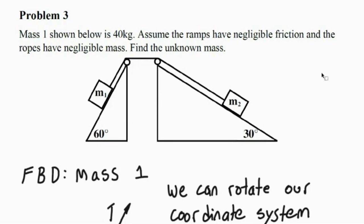So our strategy for this question: we want to know mass number 2, but if we try to draw a free body diagram of mass 2, we're going to run into some issues. Because we don't know the force of gravity on mass 2, and we don't know what the tension in that rope is yet. So we're going to have to start with mass 1 on this one.